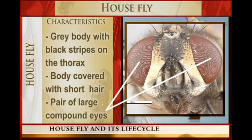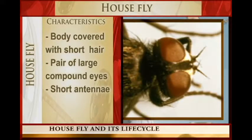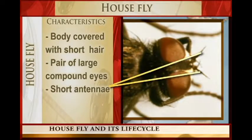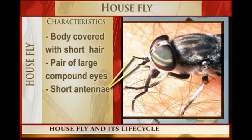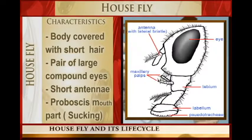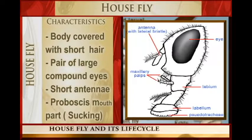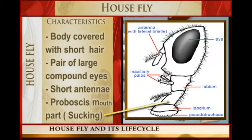It also has short antennae — the antennae are very short, and you can observe them. It has a mouth part which is a sucking mouth part, the proboscis. Its proboscis is mainly used for sucking.